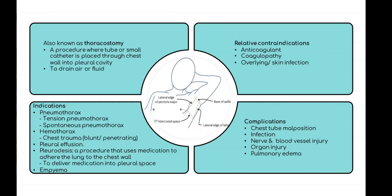The commonest complication of chest tube is malposition, with intra-parenchymal and intra-fissural locations being the most common. Other complications include infection — including empyema and surgical site infection — intercostal nerve and blood vessel injury, organ injury, and lastly re-expansion pulmonary edema, which is rare but may be a life-threatening complication.